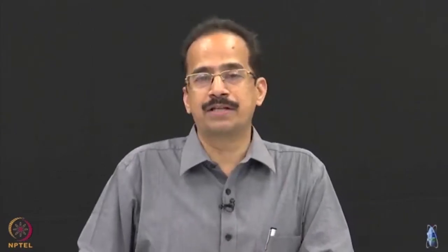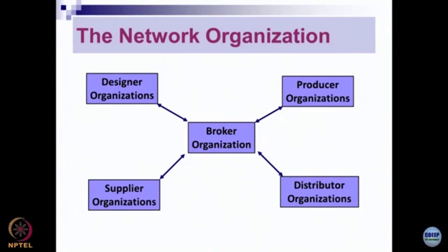The next type of organization design is called network organization. This is an example of a broker organization — it is the mediator and connecting point of different organizations. A broker organization is the center and engages with a designer organization, producer organization, distributor organization, and supplier organization for the products it deals with. The benefit is that operations can be quickly built and the business can be rapidly scaled up by forging alliances with organizations that have expertise in specific functions.